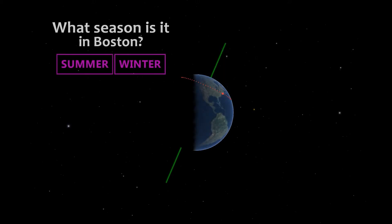Let's start with a quick challenge. What season is it in Boston for the Earth you see here? Right on! It's summer in Boston.